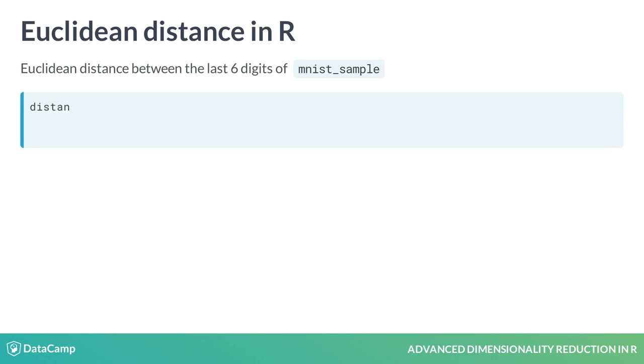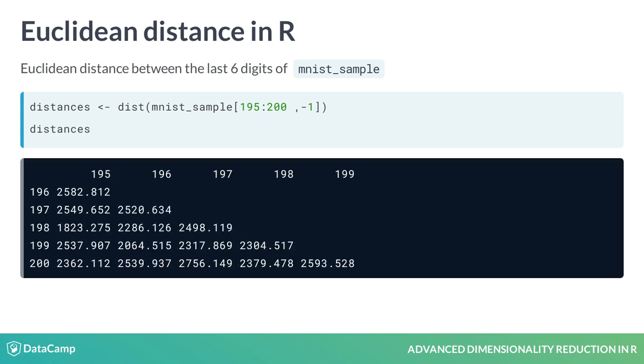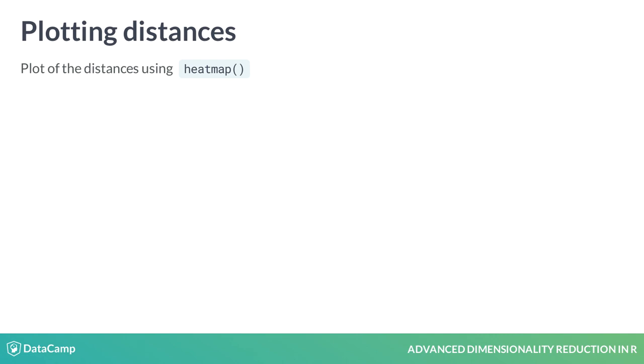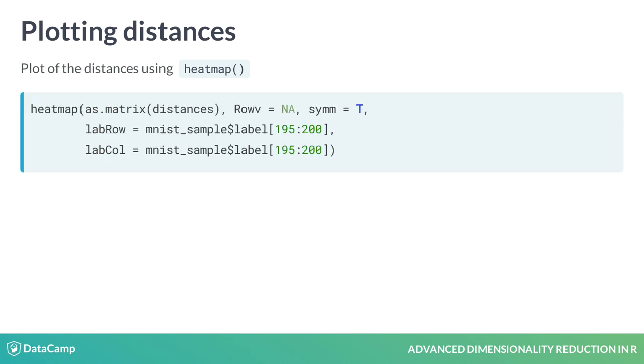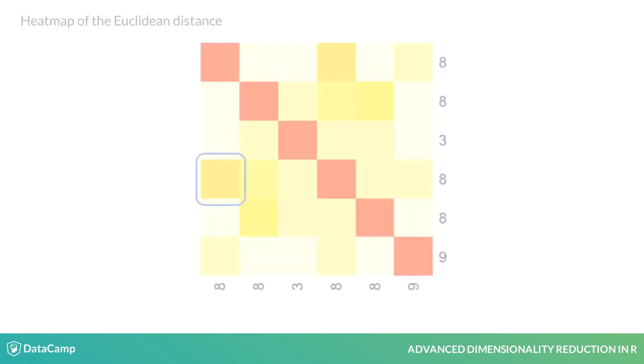Let's see how we compute the Euclidean distance of the last six digits in MNIST sample. In the object distances, you can see the computed values. Now we will plot those values using a heatmap with each digit label. The first and third examples of digit 8 are the most similar regarding this metric because the color is darker, but that does not happen for the other digits with label 8.